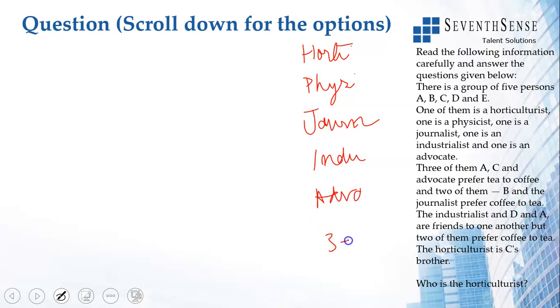Now we have three people liking tea and two people liking coffee. Now we have A, B, C, D, E. We have three of them, A, C, and Advocate prefer tea.